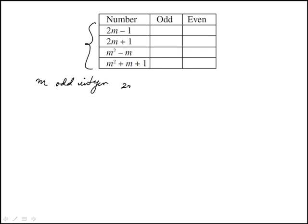So start with 2m minus 1. If m is odd, 2 times m, even times odd, would be even. So even minus 1, 1 is odd, will be odd. So this will be odd. You can also do it with a number.